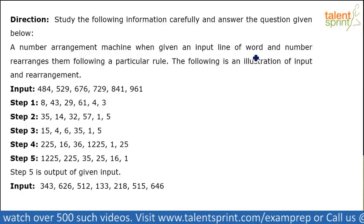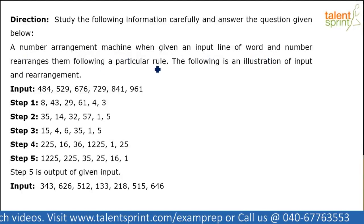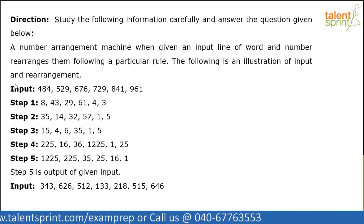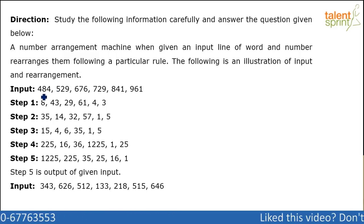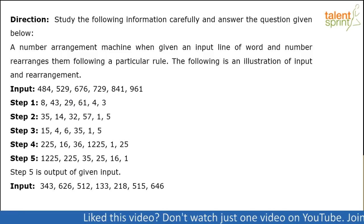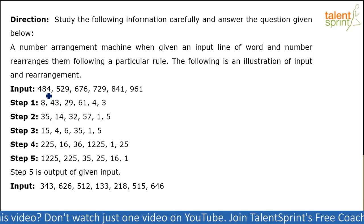A number arrangement machine, when given an input line of words and numbers, rearranges them following a particular rule. The following is an illustration of the input and its rearrangement. The input has a set of three-digit numbers: 484, 529, 676, 729, 841, and 961. If you observe, these numbers are all perfect squares — 22 squared, 23 squared, 26 squared, and so on.